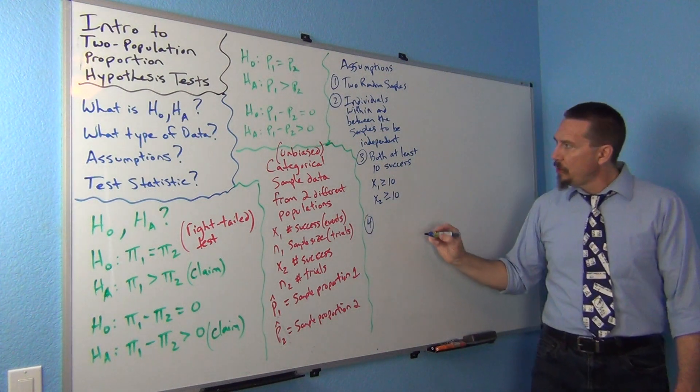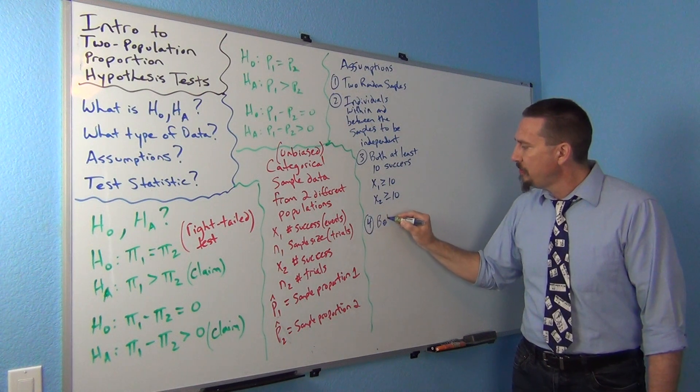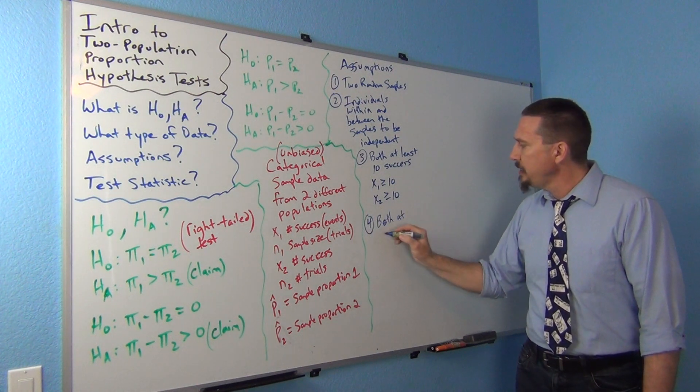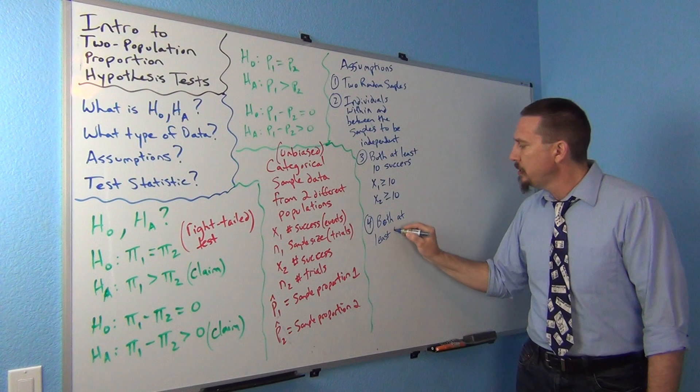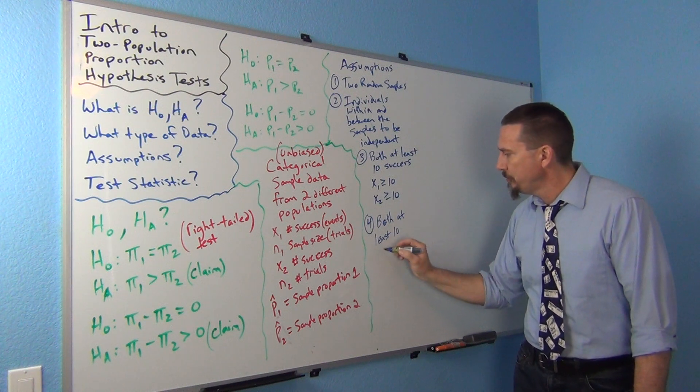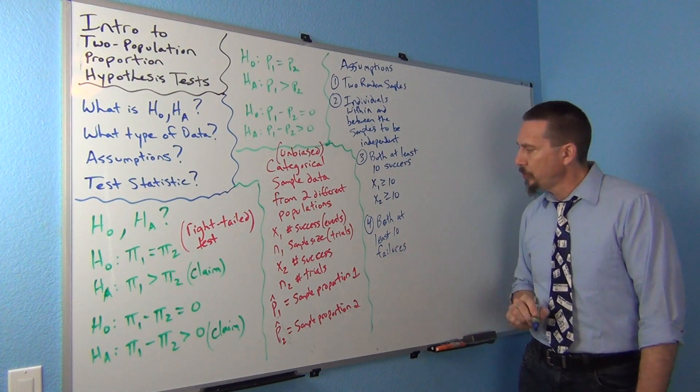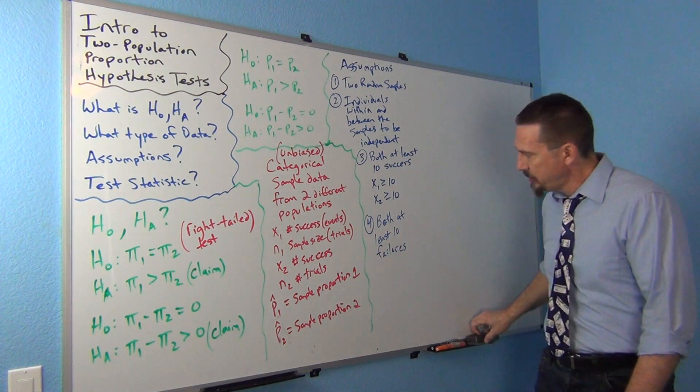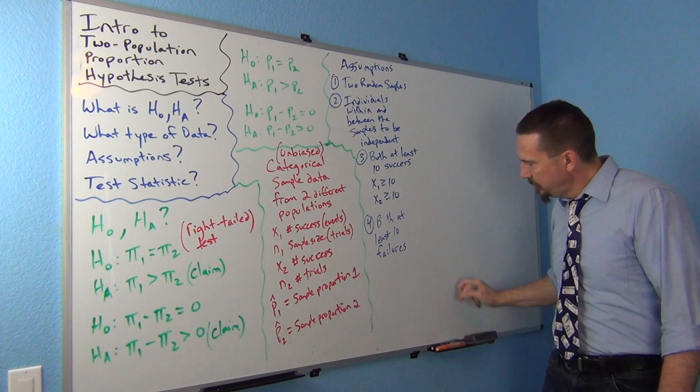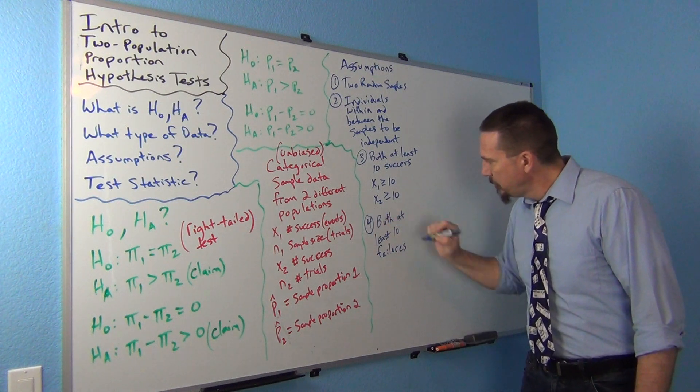And now we need both data sets to have at least ten failures. Okay? Both data sets should have at least ten failures.